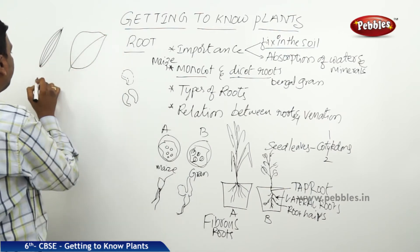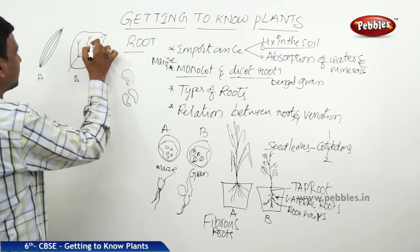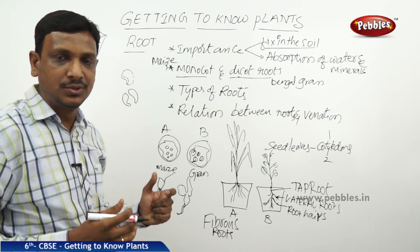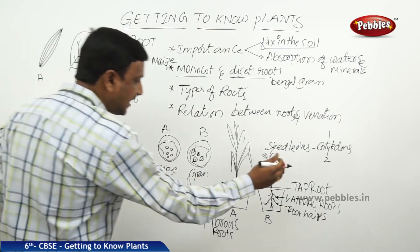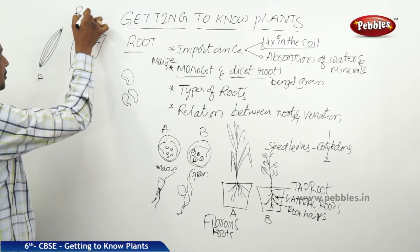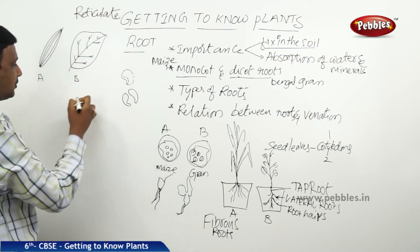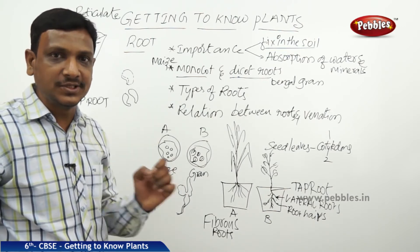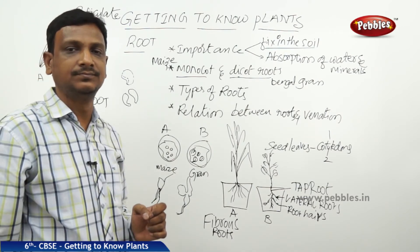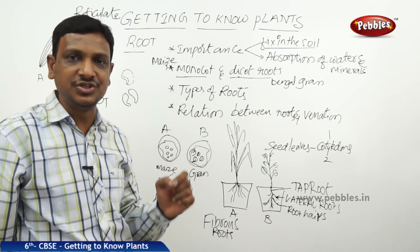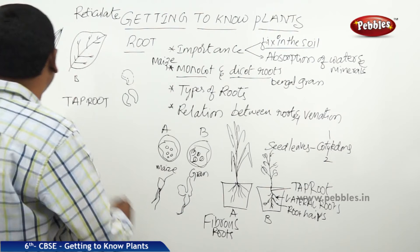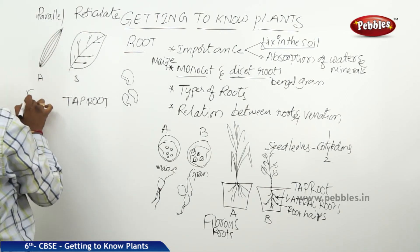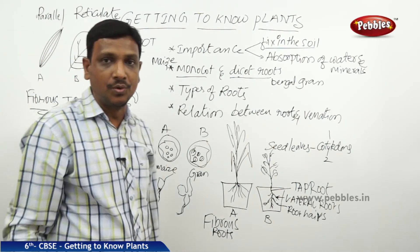We found two types of venation: parallel venation and reticulate venation. Here we see parallel venation in case of A and reticulate venation in case of B. We are now finding the connection between venation type and root type. In case of reticulate venation, plants will have a tap root system. Plants that have parallel venation in their leaves have fibrous roots.